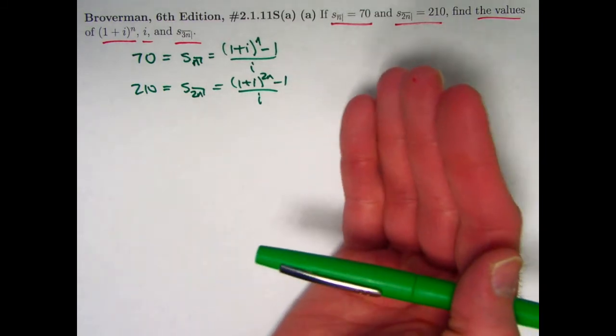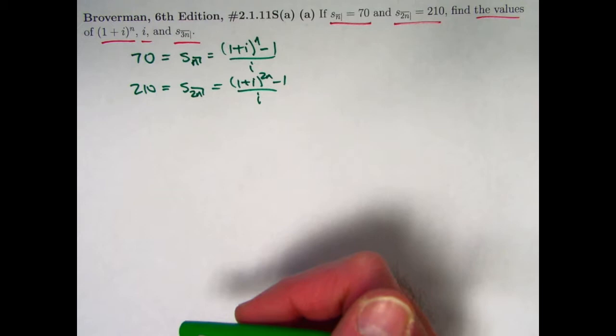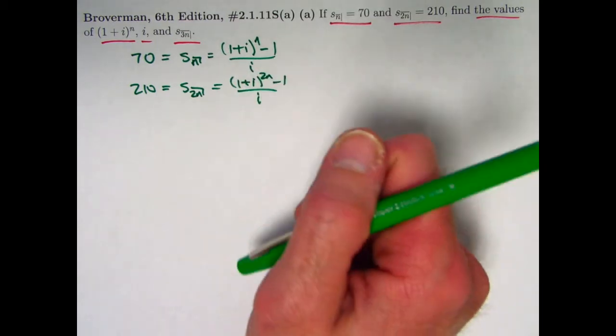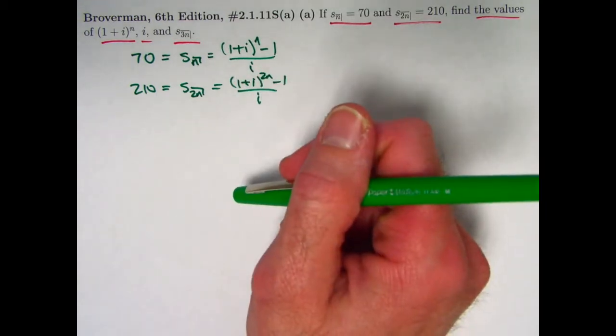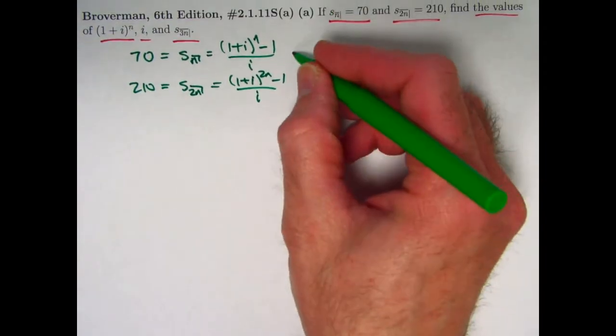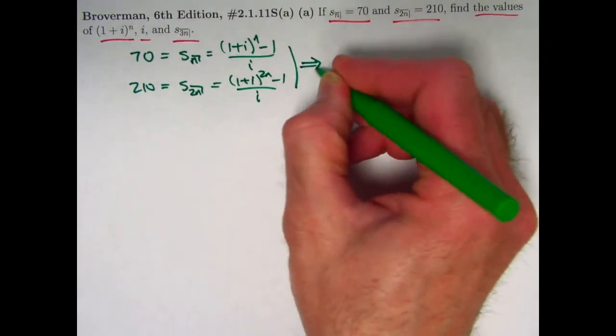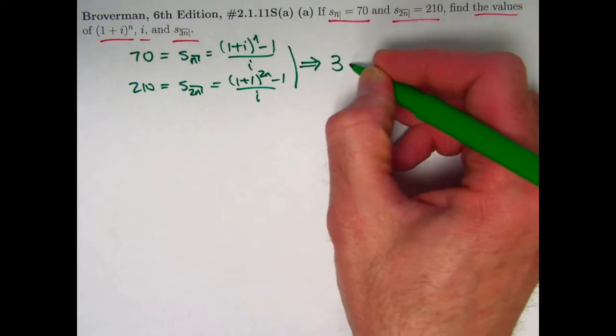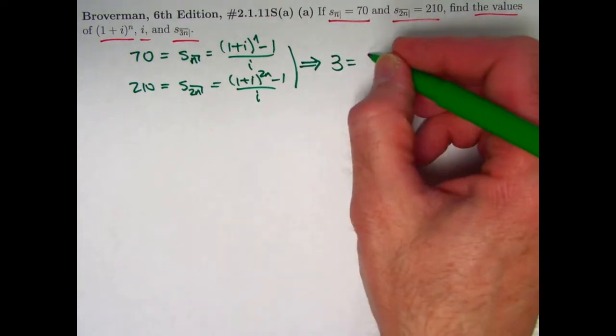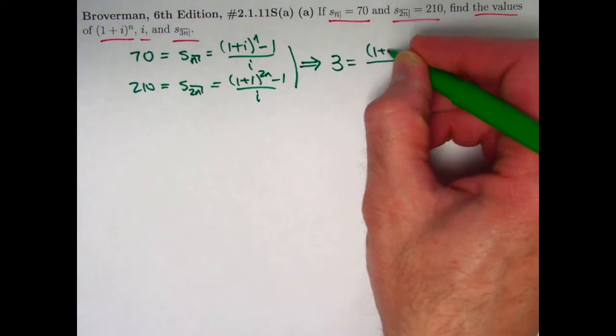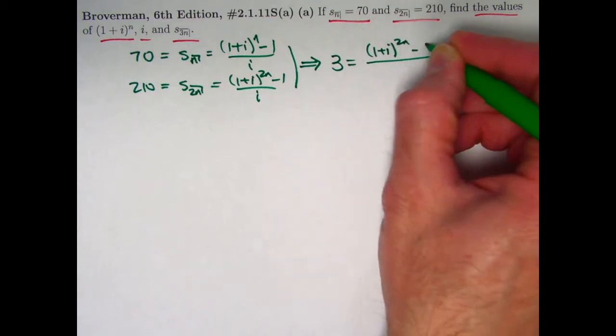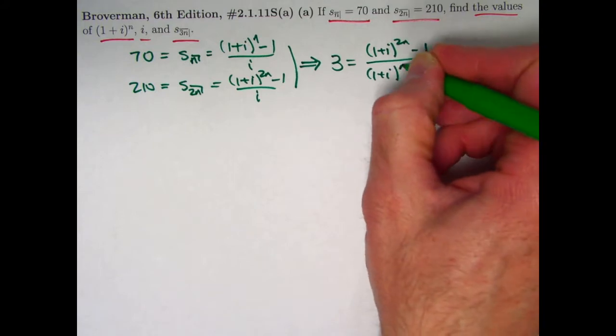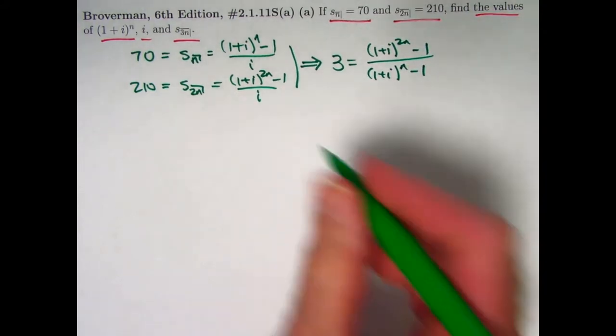Another good thing to see is that the i's would cancel on the bottom if we do so. Let's take the bottom equation and divide it by the top equation. We'll get 210/70 = 3 equals ((1+i)^2n - 1) / ((1+i)^n - 1). These i's here cancelled.